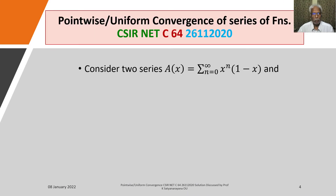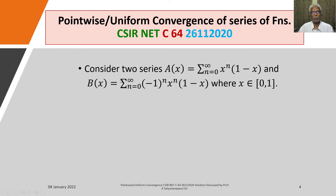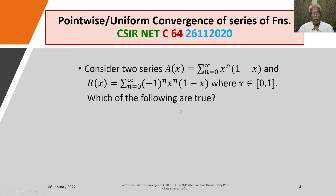The problem is: consider two series. Capital A is equal to sigma n=0 to infinity of x^n times (1−x), and B is equal to sigma n=0 to infinity of (−1)^n times x^n times (1−x), where x belongs to the closed and bounded interval [0, 1]. Which of the following are true?